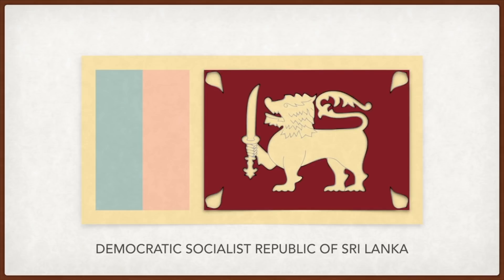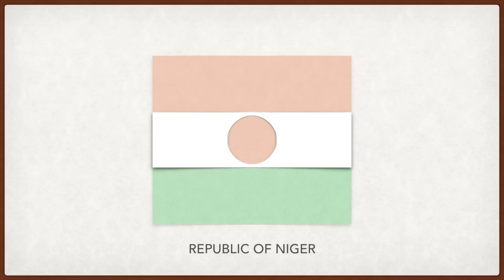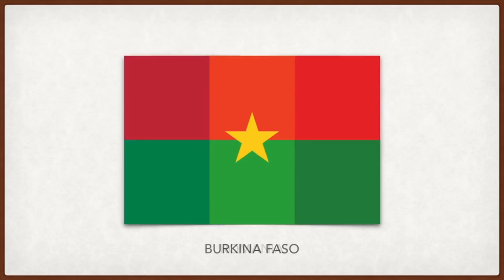Niger: the orange represents the Sahara Desert, the white the Niger River or purity, the green the fertile land or hope, and the orange circle independence. Romania: the blue, yellow, and red represent liberty, justice, and fraternity respectively. Burkina Faso: the red represents the revolution, green the country's natural riches, and the yellow star the guiding light of the revolution.